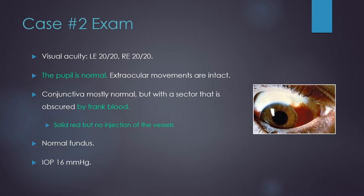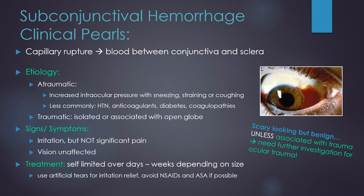On exam, the patient has normal visual acuity, normal pupils, and intact extraocular movements. The conjunctiva has one sector obscured by frank blood. The rest of her exam shows a normal fundus and normal intraocular pressure. This patient has a subconjunctival hemorrhage — capillary rupture causing rapid accumulation of blood in the potential space between the conjunctiva and the sclera. These mostly occur spontaneously with increased intraocular pressure caused by sneezing, straining, or coughing, and less commonly in patients with severe hypertension or those on anticoagulants. Patients experience irritation but not significant pain and their vision is normally unaffected. These are self-limited and usually resolve over days to weeks depending on size — scary looking but benign. However, the traumatic variety can be associated with open globe and requires further investigation.